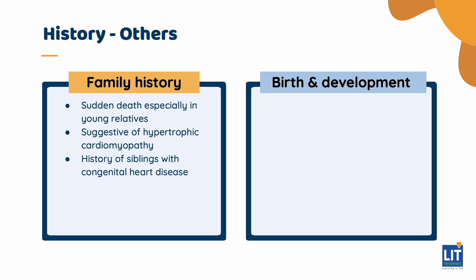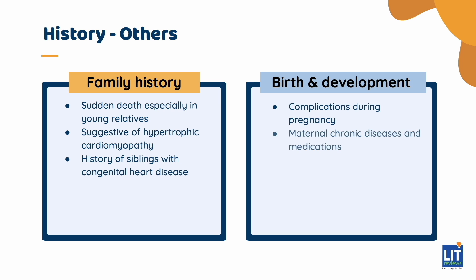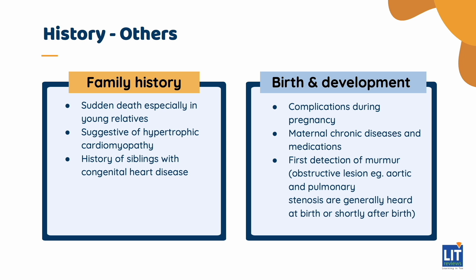It is also useful to have an idea of the birth and developmental history of the child, including complications during pregnancy and maternal chronic diseases and medications. Maternal diabetes mellitus, SLE, certain infections, anticonvulsant medications, and maternal substance abuse are associated with a higher rate of congenital heart defects. Also ask when the murmur was first detected, as obstructive lesions such as aortic and pulmonary stenosis are generally heard at birth or shortly after birth, whereas lesions in which shunts and flows depend on a delayed fall in pulmonary resistance, such as in atrial septal defects or ventricular septal defects, are more typically heard days or weeks after birth.